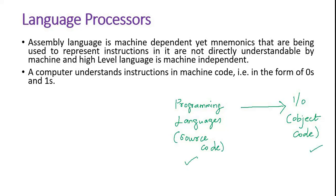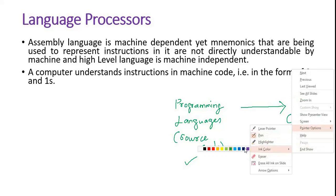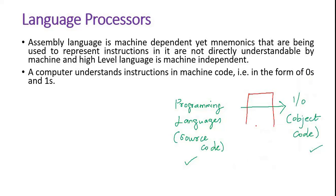Programming languages have come — for example, Python or C. You know how to write code. Say I want to compute simple interest, so I know how to write that code. But my computer understands only ones and zeros. So in between the source code and the required object code, you have a language processor.